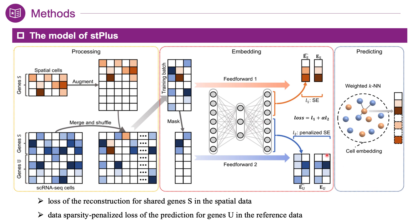The two parts of loss are then scaled by the number of genes and cells, respectively. After model training, we can obtain the joint embedding of cells in the spatial data and the reference data. For each spatial cell, ST-plus calculates its cosine distance with each reference cell based on the learned cell embeddings. The neighboring 50 reference cells are then used to predict gene expression in the spatial cell via a weighted KNN approach.